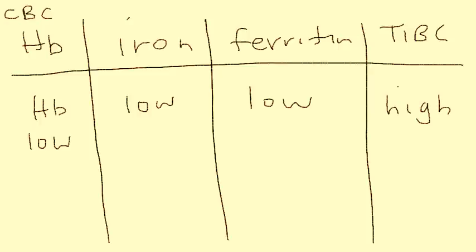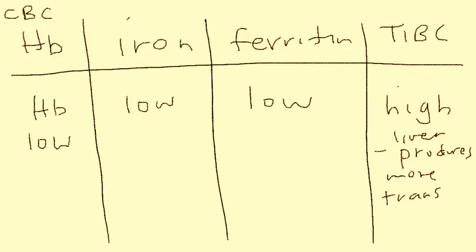Why is TIBC high? When you have iron deficiency, the liver produces more transferrin because it's a compensatory mechanism. There's low iron in the body, so the liver responds by making more transport molecules — transferrin — in an attempt to maximize the use of the little iron that's available. That is why TIBC is high.